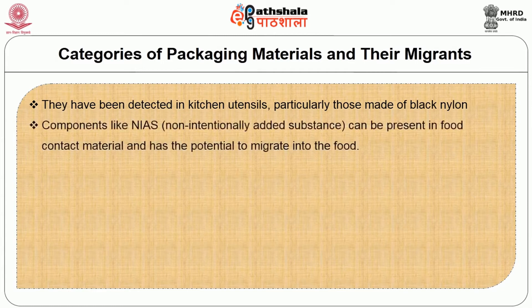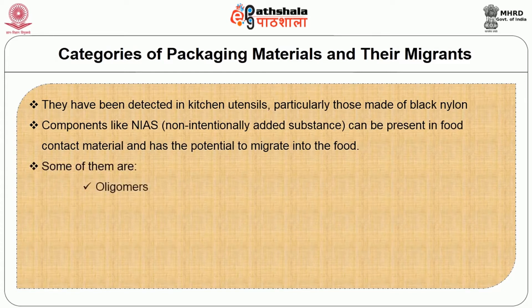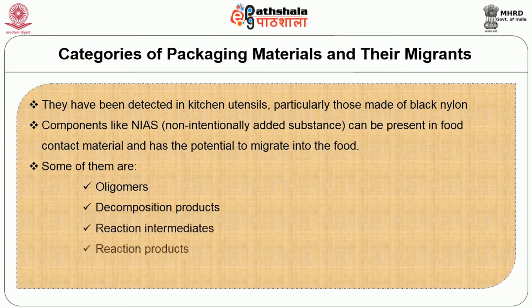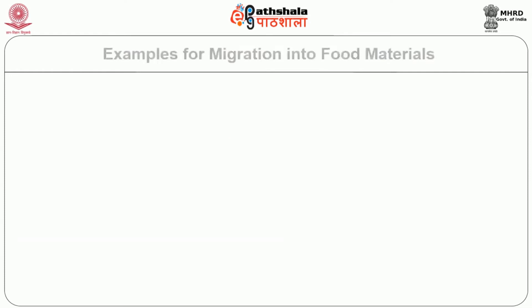Components like non-intentionally added substances can be present in food contact material and have the potential to migrate into the food. Some of them are oligomers, decomposition products, reaction intermediates, reaction products, and impurities in raw materials.